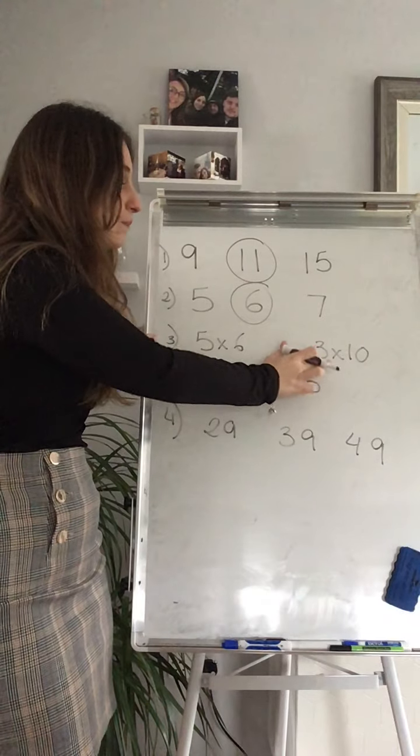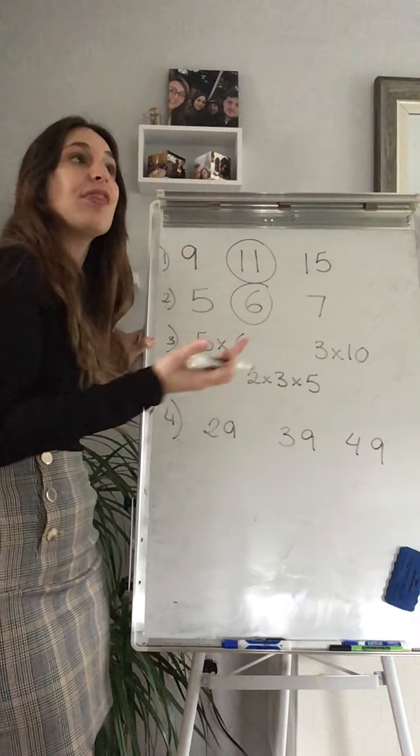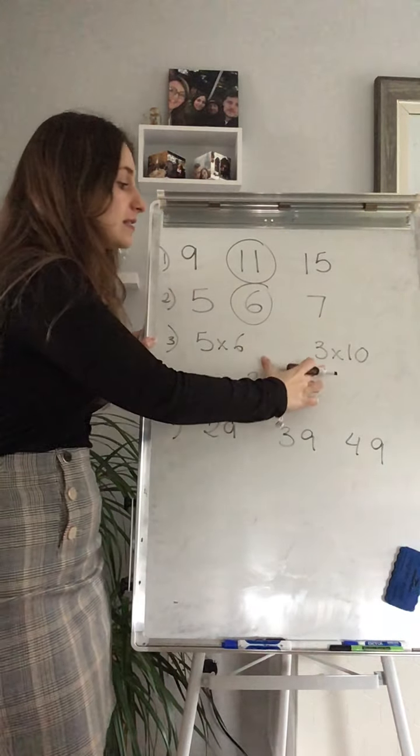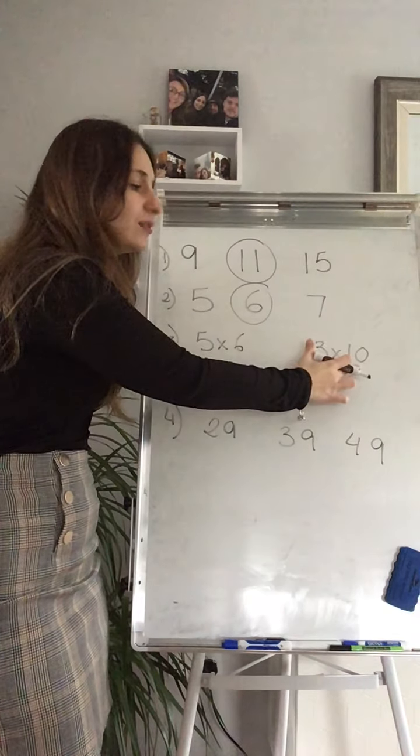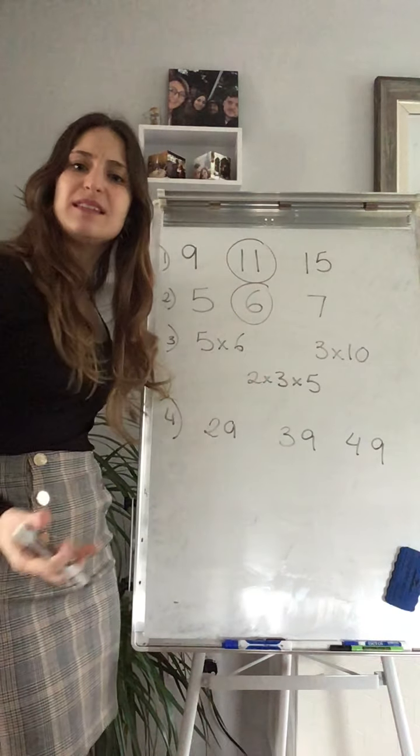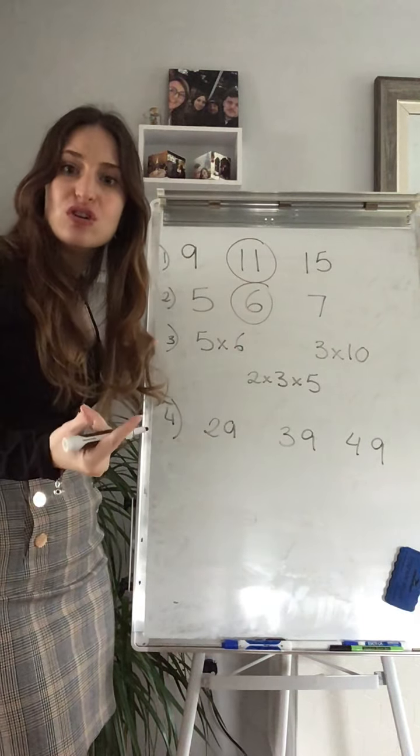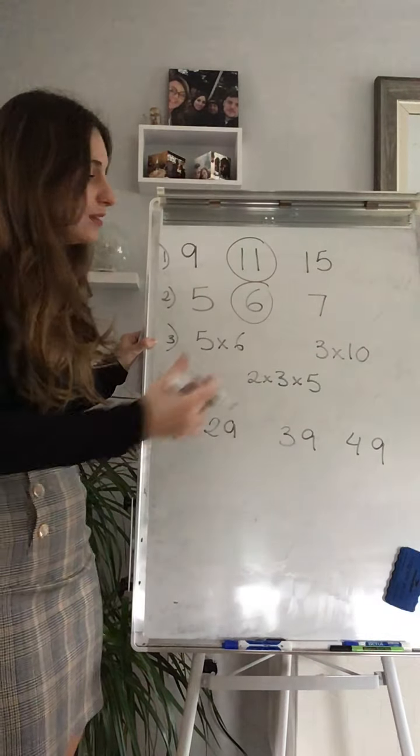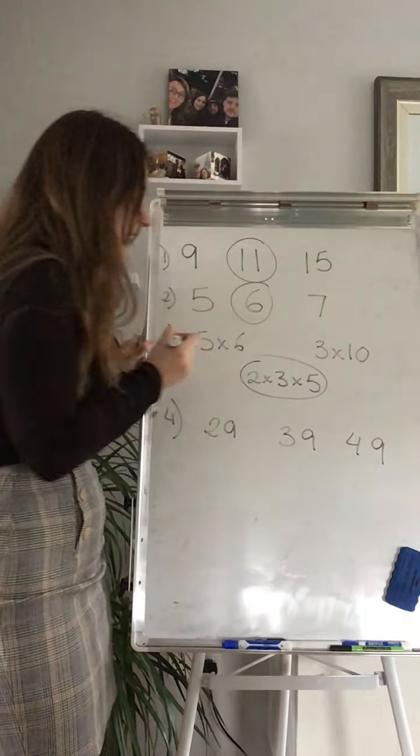It's going to go for B. 3 times 10, yeah? 30. But 3 is a prime number. But you can divide 10 by 5 and by 2. So it's not a prime number. So my answer is C.